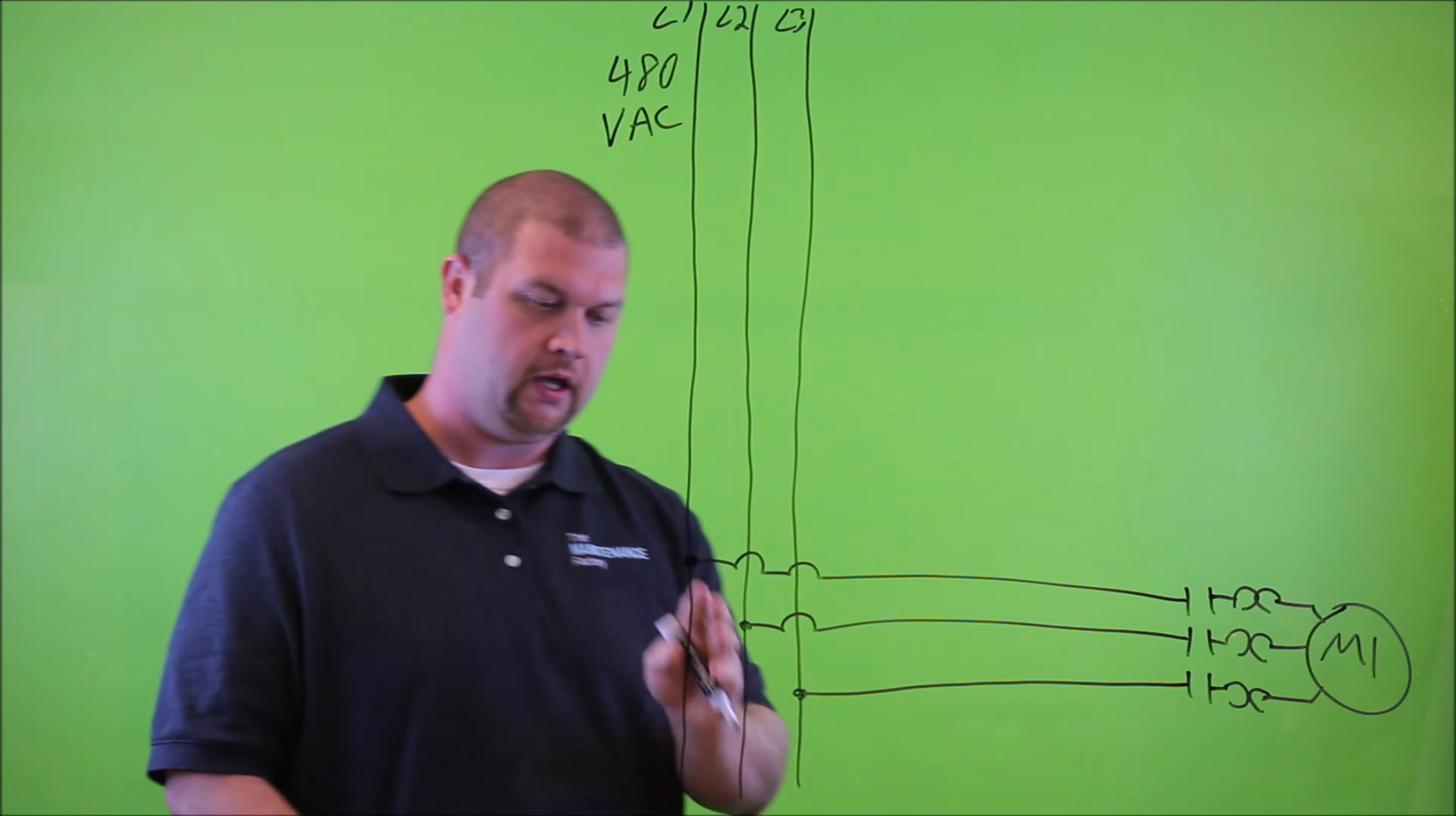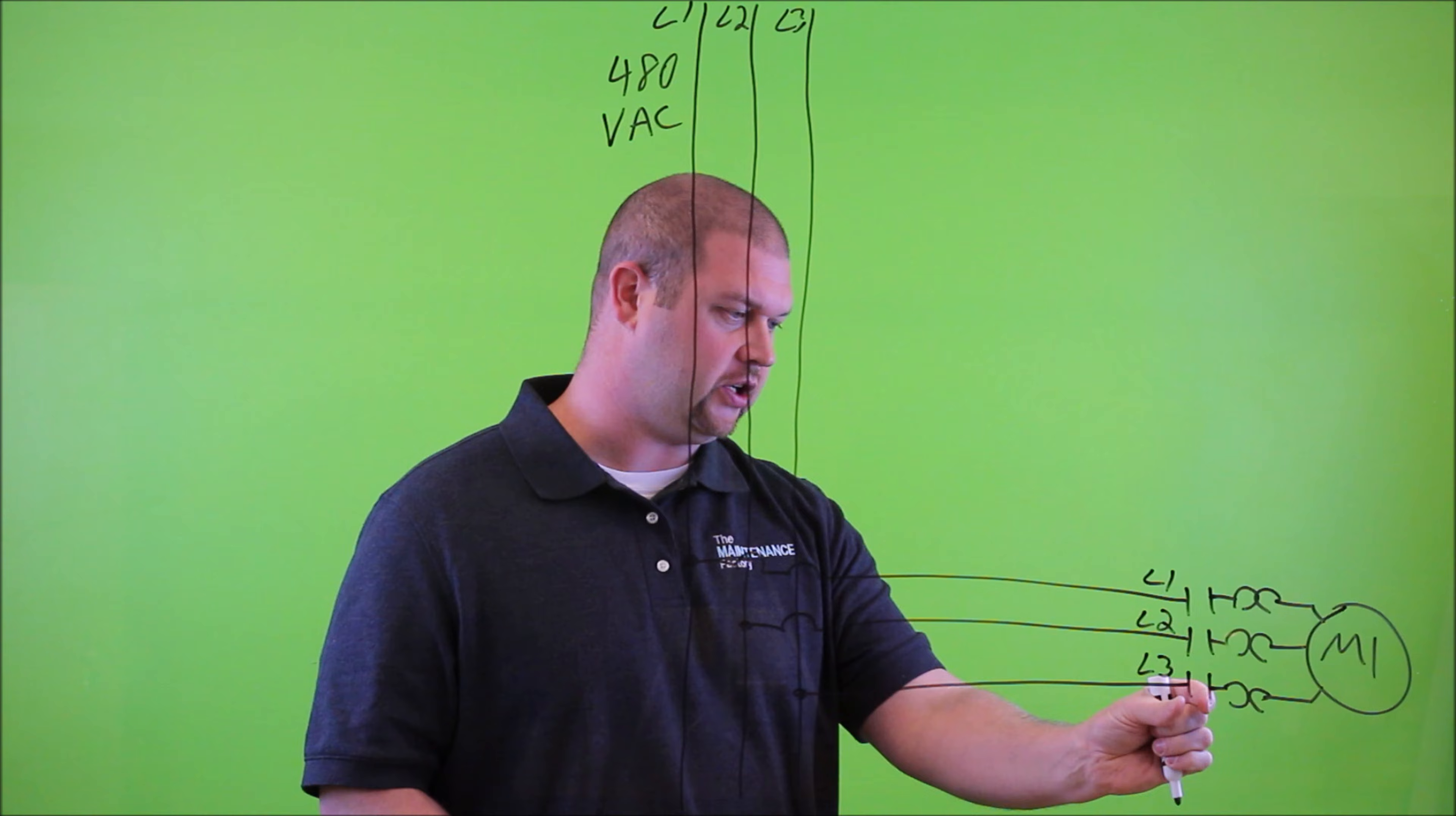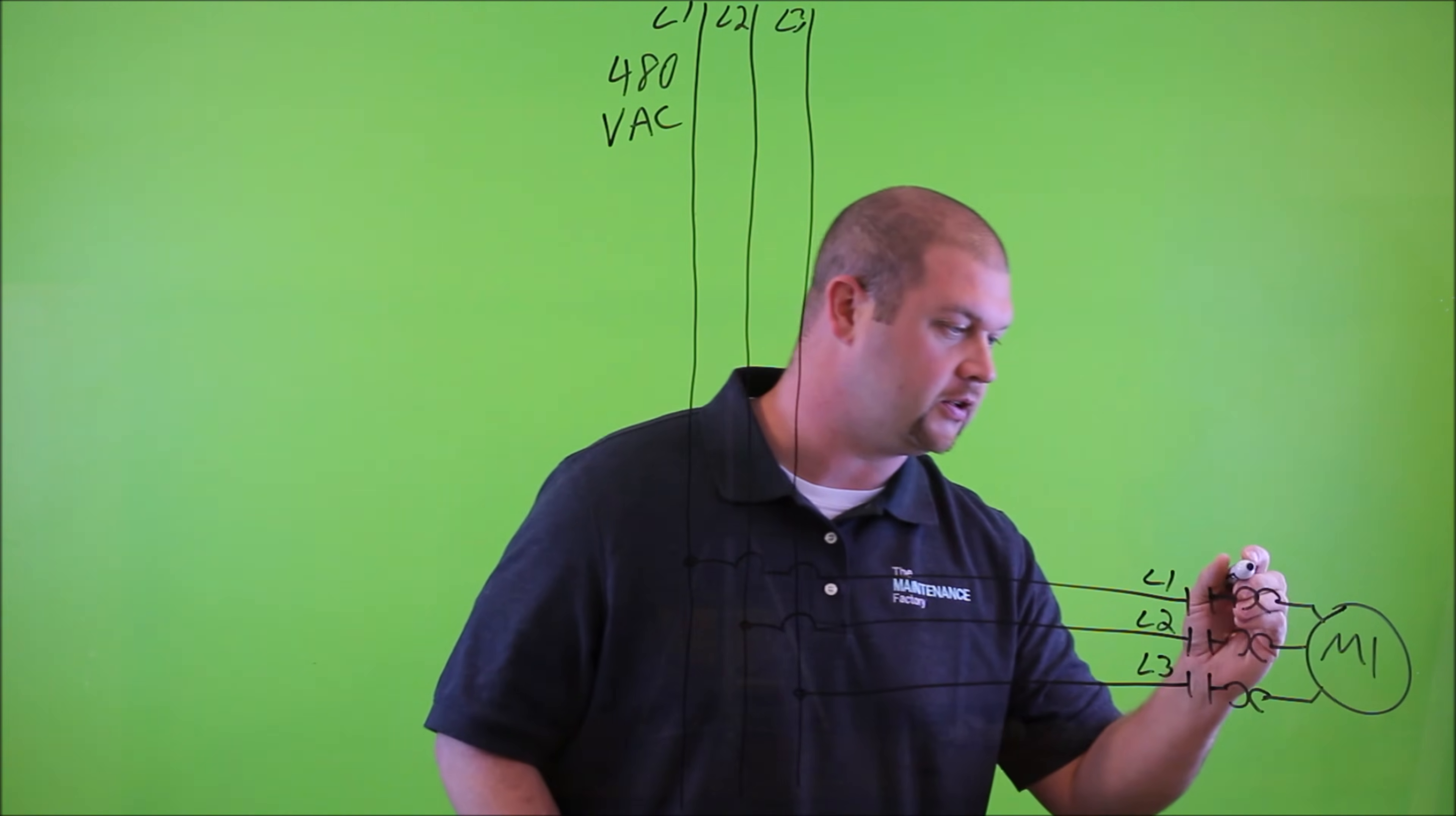Okay, so the three dots here represent that the line side of the contactor is connected to L1, L2, and L3. And this section of the contactor is the actual contactor itself. And this portion of the contactor is the overload circuit. Now, I've got that drawn just a little bit backwards, but just forgive me.